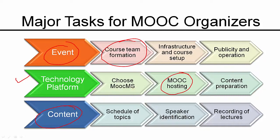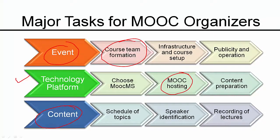Overall, for running a MOOC, the tasks that organizers must address fall into three major tracks: events, technology platforms, and content. For the event track, you start with course team formation, then infrastructure setup, and then course operation. For the technology platform, you address the MOOC management system, hosting options, and content creation. The content itself is a separate track where you look at the schedule of topics, identify speakers, and schedule the recording of content. Thank you.